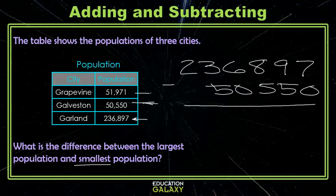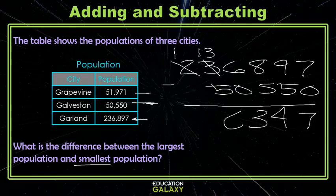So all this subtraction looks pretty clean: seven minus zero, nine minus five, eight minus five, six minus zero. The three minus five is a trouble spot for us. So what we'll do is we're just going to take one from here and give it to the neighbor. Now we're all set up. Seven minus zero is seven, nine minus five is four, eight minus five is three, six minus zero is six, thirteen minus five is eight, and one minus nothing is one. And you're all done.